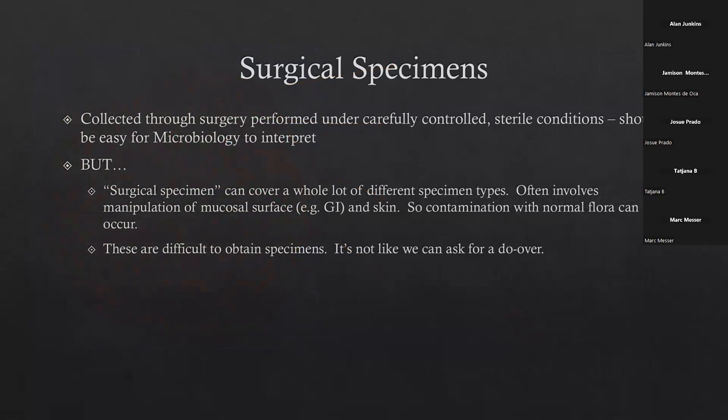Here's another problem with surgical specimens: it's a big range. Every single part of your body could be a surgical specimen. Even though we're talking about disinfecting the skin and cutting through to take something we'd normally expect to be sterile, surgery often involves manipulation of mucosal surfaces — the GI tract, the skin — so contamination with normal flora can occur, even in surgically collected specimens.